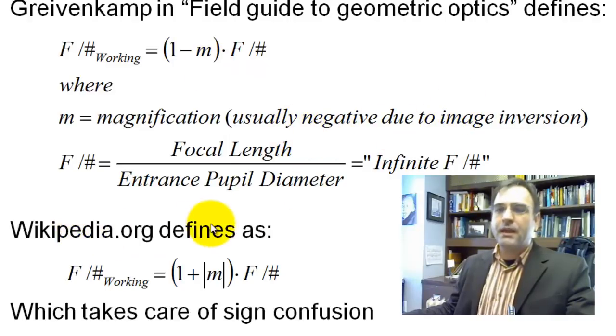Now Wikipedia defines, and they've recently changed this definition, as one plus the absolute value of magnification. This takes care of some of the sign confusion.